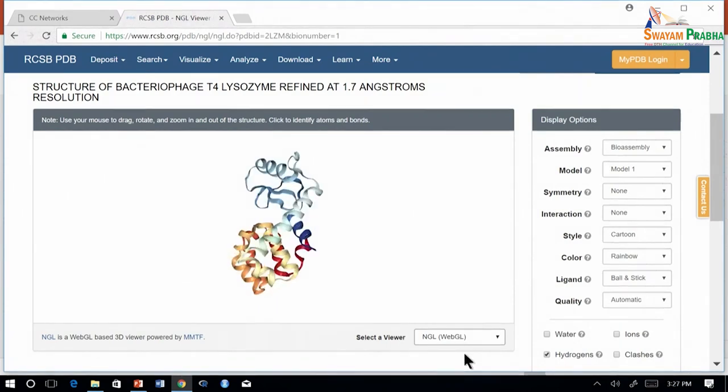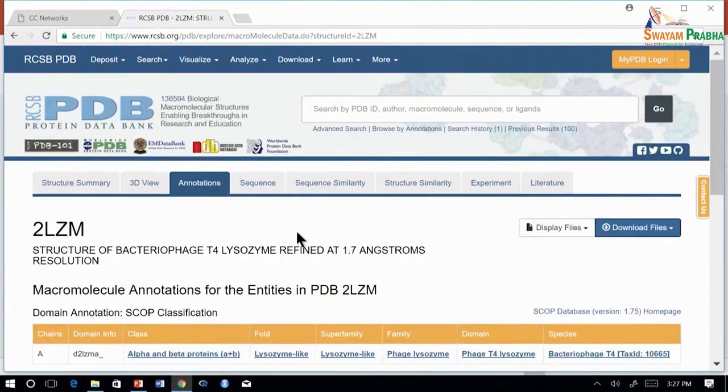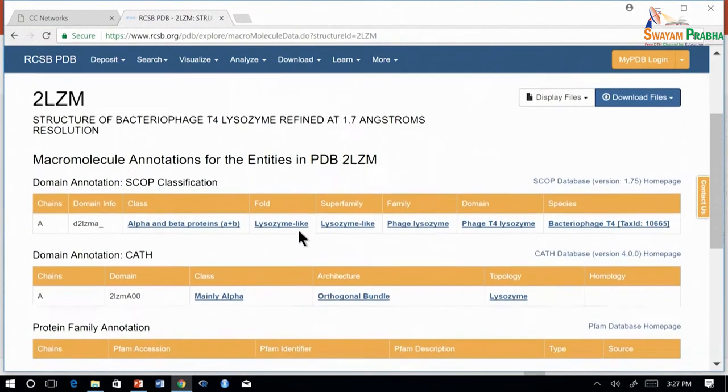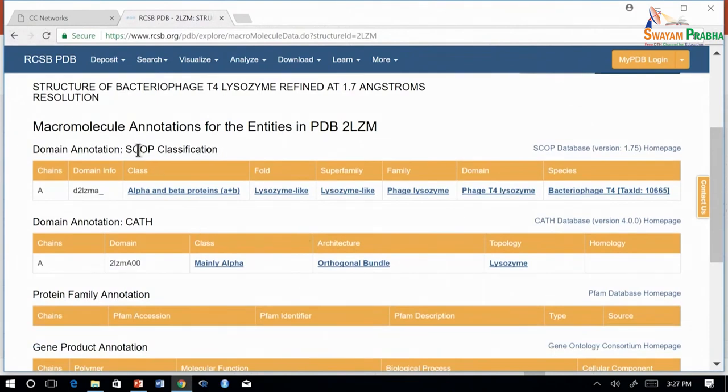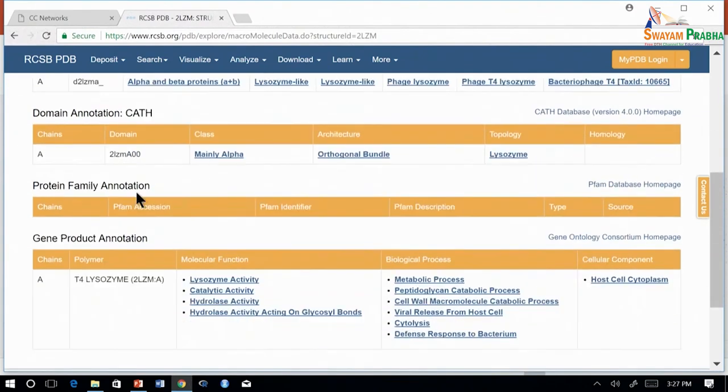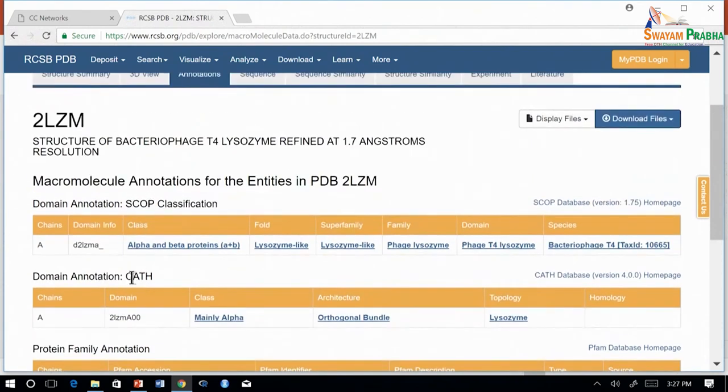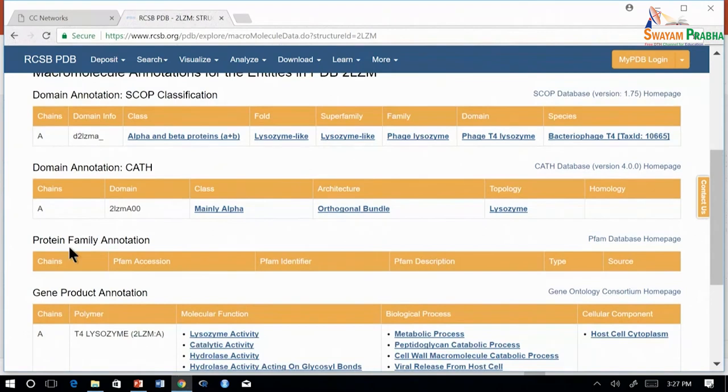We will move on to annotations. For this entry we have annotations from SCOP, CATH, PFAM, as well as gene product annotations. SCOP and CATH give an idea about the protein class which 2LZM belongs to, and PFAM as well.